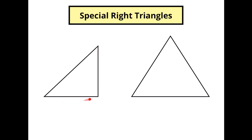So here we've got a right triangle — and not only is this a right triangle, but this is an isosceles right triangle, which means that these two sides are the same length. If those two sides are the same length, that means these two angles are the same. So this is actually a 45-45-90 triangle.